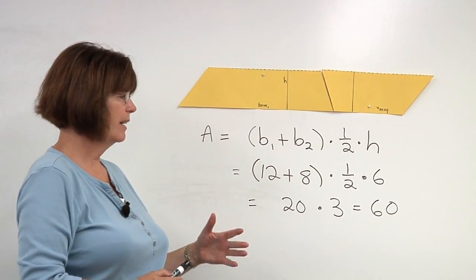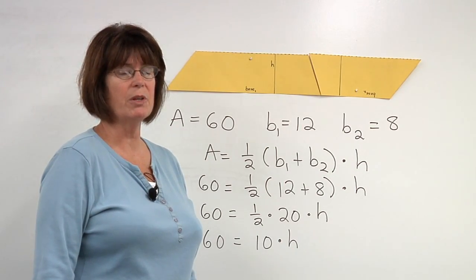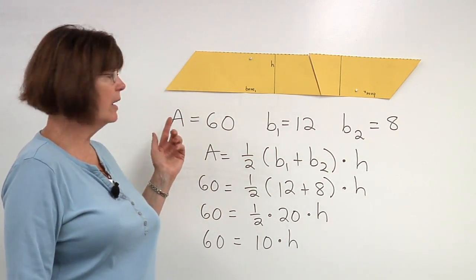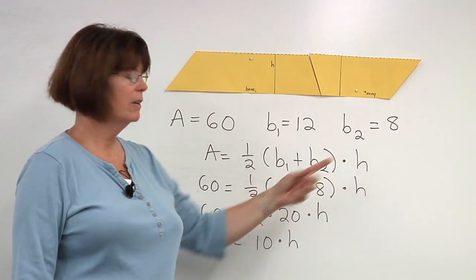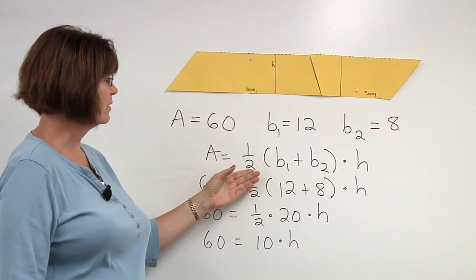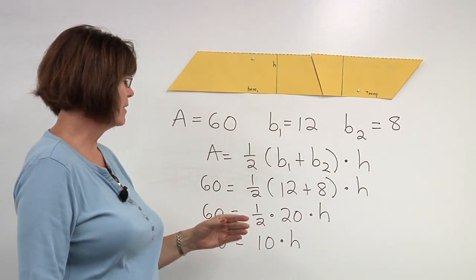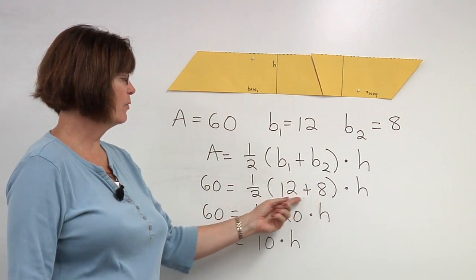Let's look at an example. Here's how to work backwards using the same numbers we used in finding the area of the trapezoid. If our area is 60 and our two bases are 12 and 8, our formula is area is one half of base 1 plus base 2 times the height. We substitute 60 for the area, 12 and 8 for the two bases.